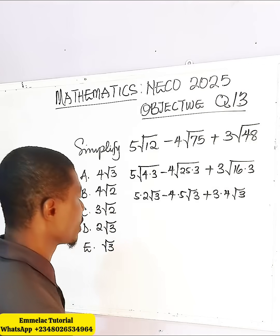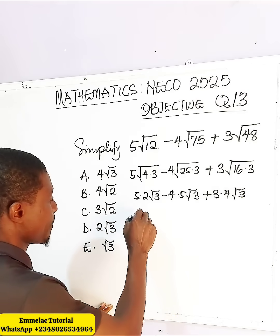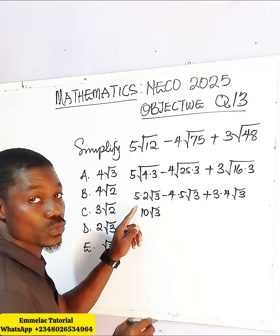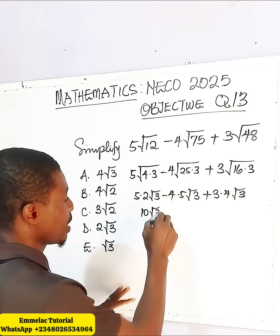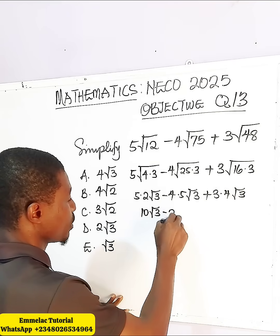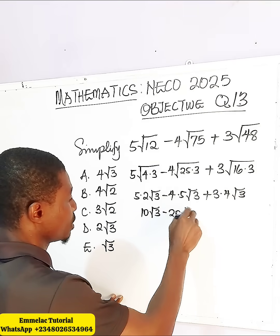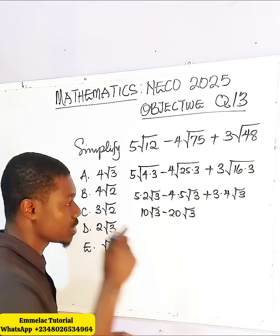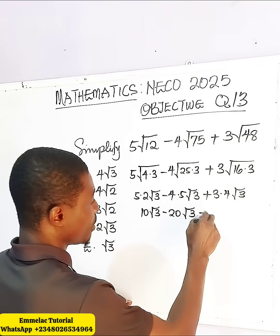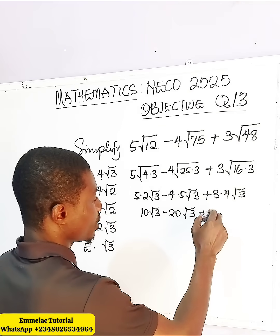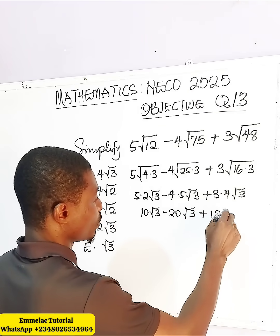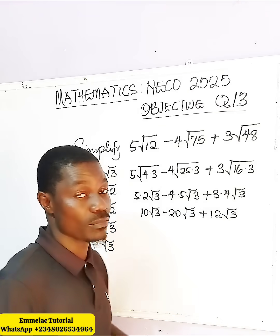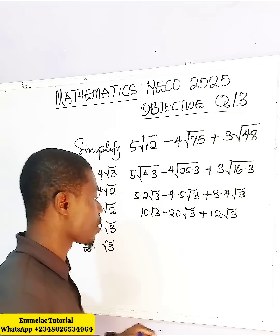So here we have 10√3, because 5 times 2 is 10. Minus 20√3, because 4 times 5 is 20. Then plus 12√3, because 3 times 4 is 12.